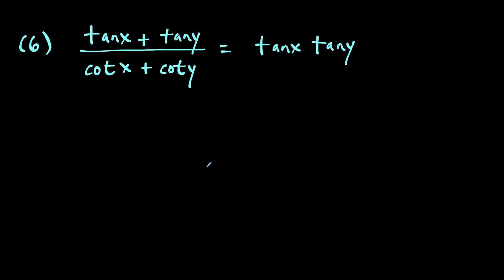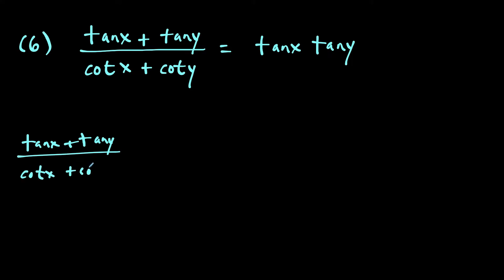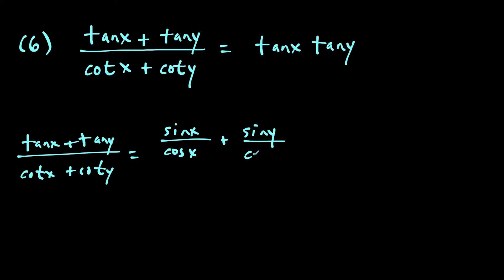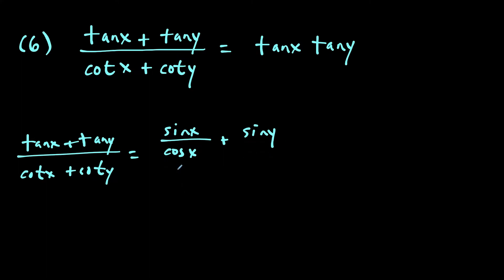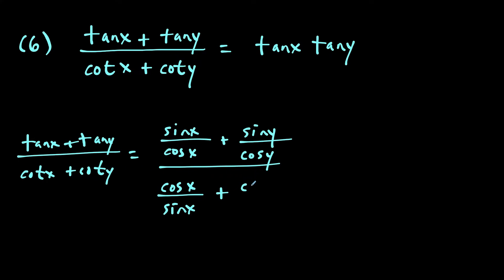For the last question, this one is definitely a bit insane. We're trying to show the identity is true and we start with the more complicated side. We rewrite tan x plus tan y over cotangent x plus cotangent y. Tangent x becomes sine x over cosine x, tangent y becomes sine y over cosine y. Cotangent x becomes cosine x over sine x, and cotangent y becomes cosine y over sine y. This fraction is an absolute mess.